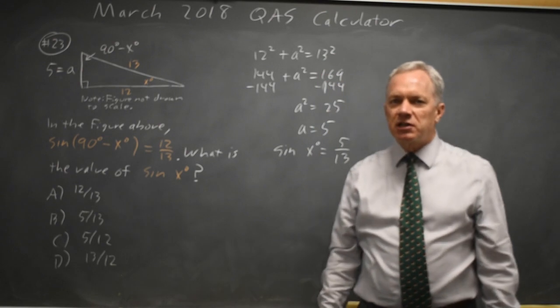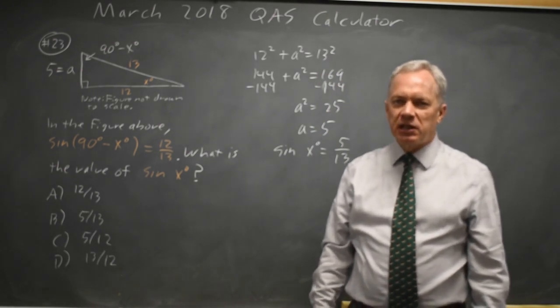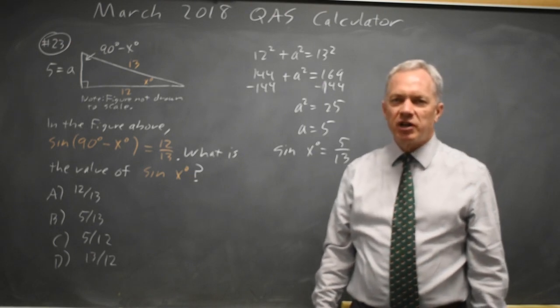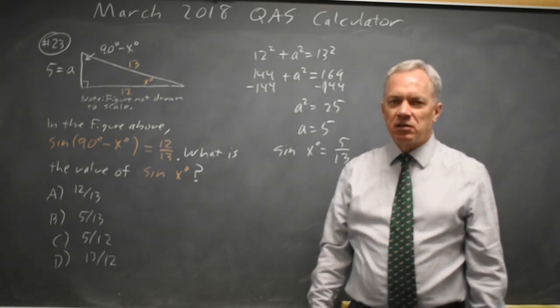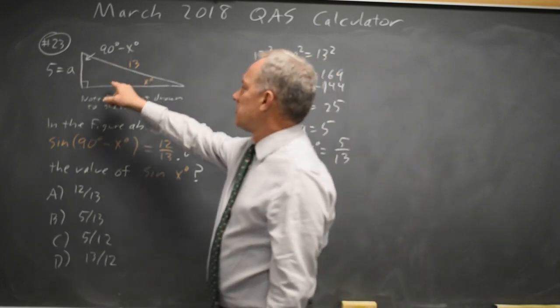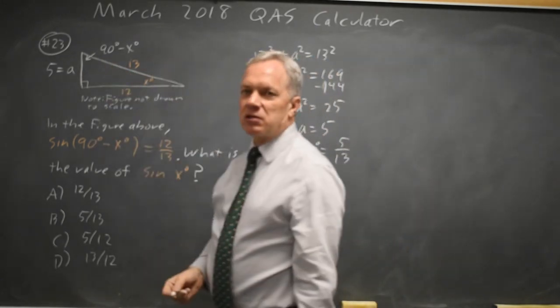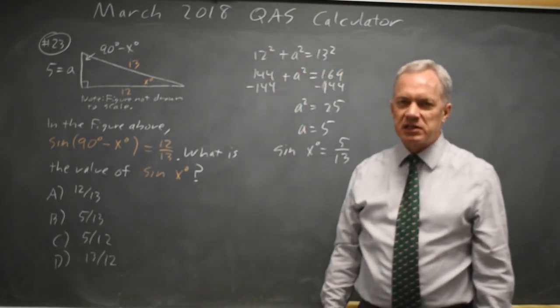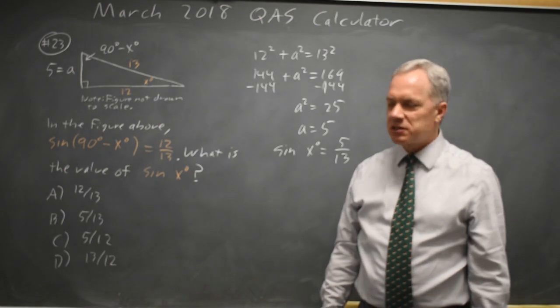And if you're worrying that I chose particular values, any values with these proportions would have worked, but it's easy to work with integer values. Since all triangles where this angle has a sine of 12 over 13 are similar, all triangles will give the same ratios among the sides, so I might as well choose the easiest numbers, whole numbers.